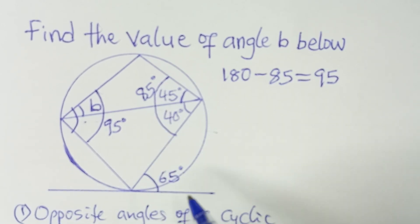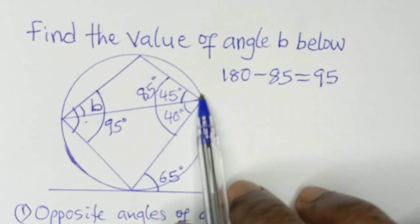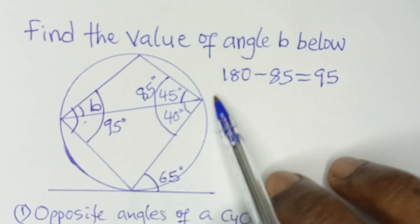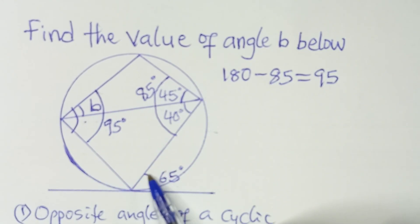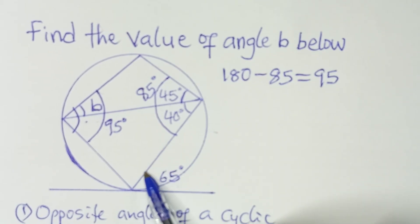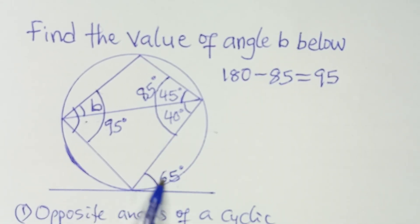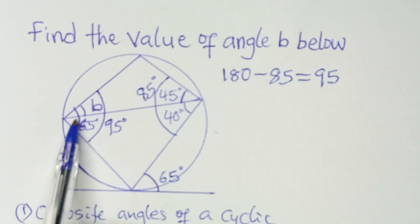The second theorem we apply here states that angles in alternate segments are equal. This is a chord, and this is a tangent — a tangent is an external line that touches a circle. The angle between this chord and this tangent on this side is 65 degrees. The angle that this same chord makes inside this triangle is also 65 degrees. So this portion inside this triangle is 65 degrees.